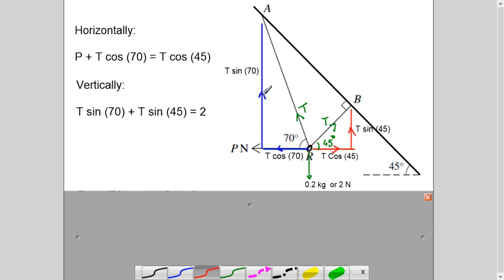Now vertically, this is acting upward, this is acting upward, but this is acting downward. So T sine 70 plus T sine 45 is equal to 2 newtons. So this is how we are getting two equations.